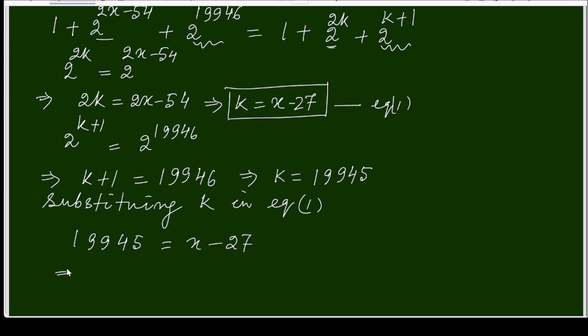Substituting in equation 1, I will get 19945 equals x - 27. Now we are able to get x: x equals 19945 + 27, which equals 19972.